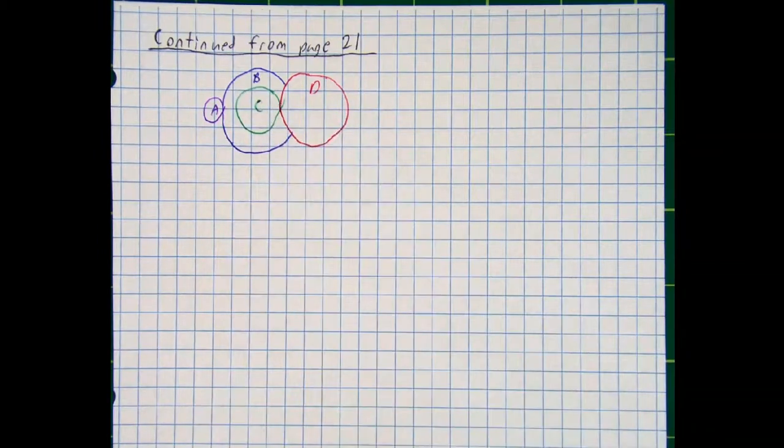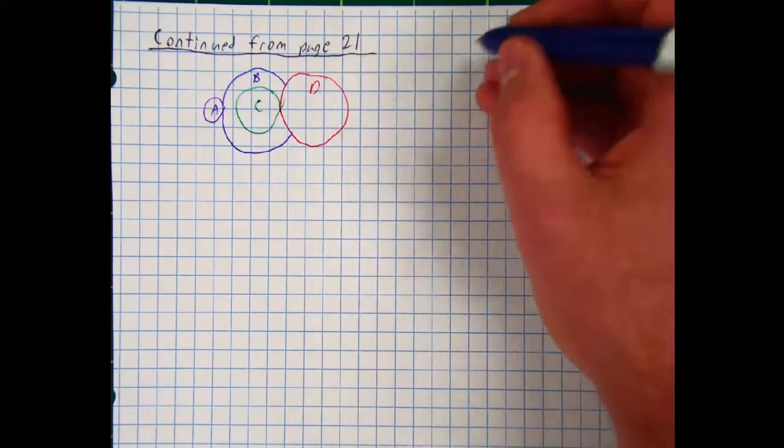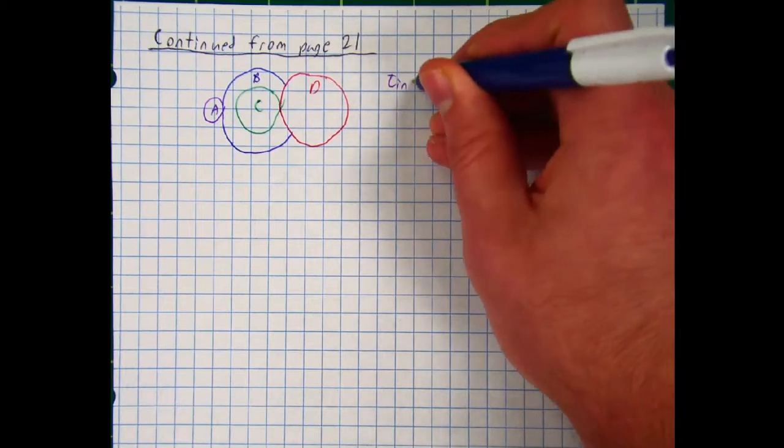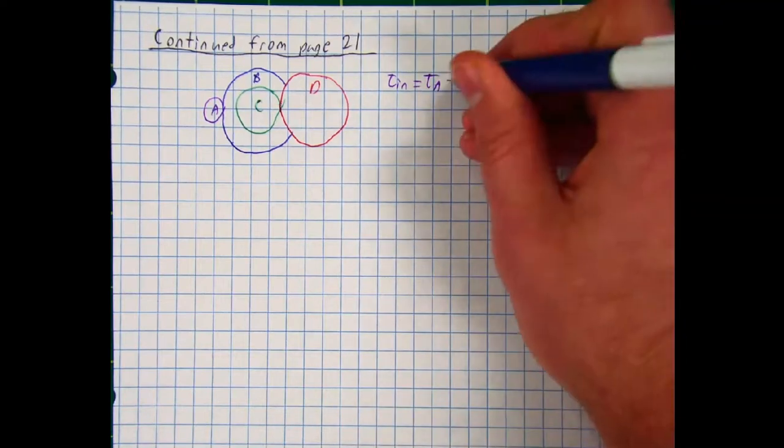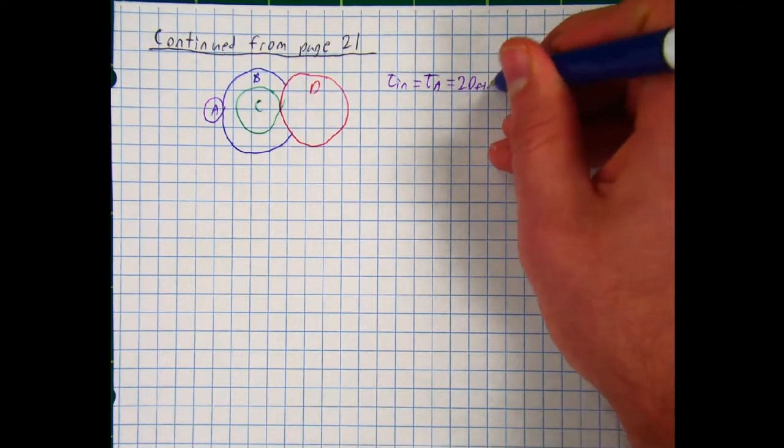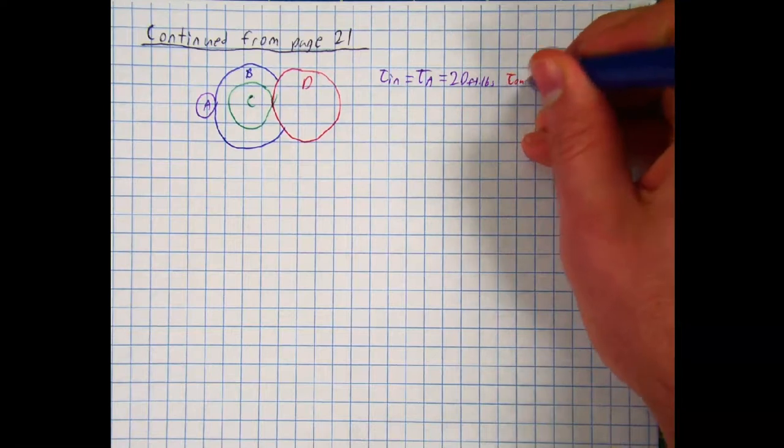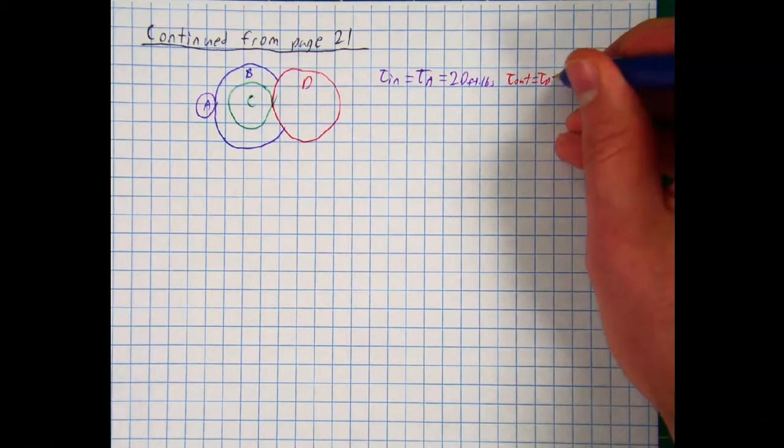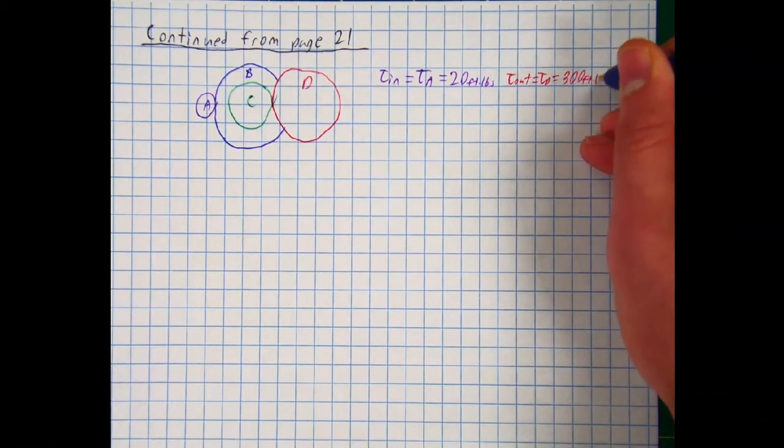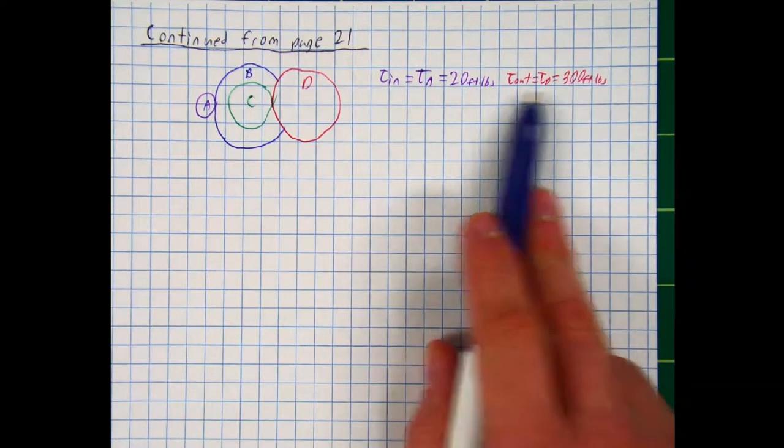And let's say we know the input and output torque. So the input torque in this system is the torque we apply at torque A. And let's say that is 20 foot-pounds. And let's say the output torque at this system, which would of course be the torque at torque D, let's say that's 300 foot-pounds. And so this time we're starting with knowing the total torque input and the total torque output.